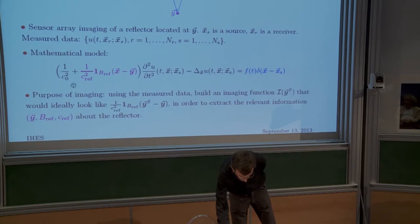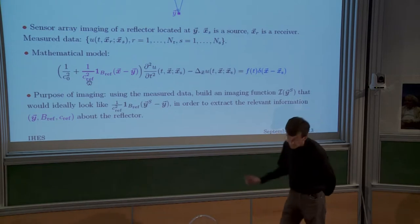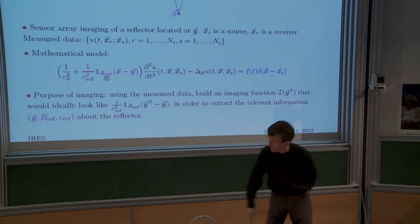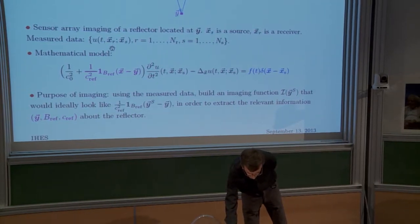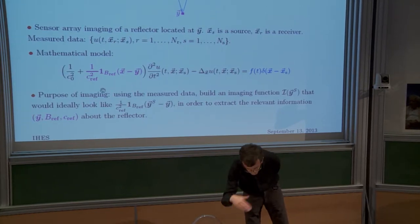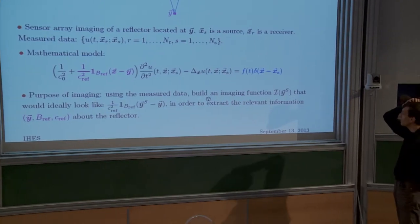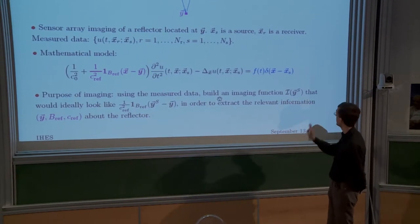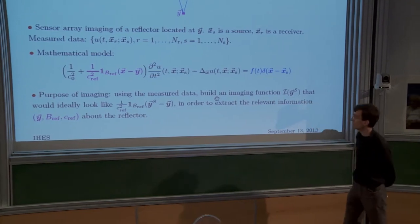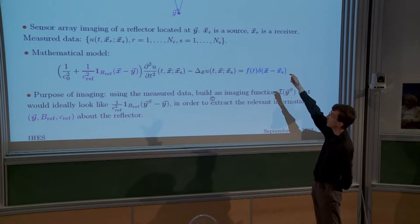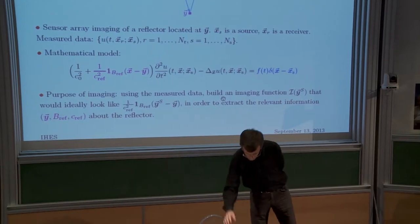In the wave equation you have a homogeneous medium with speed of propagation c0, plus a local perturbation centered around some point y that you don't know, with a shape b_ref and contrast c_ref that you don't know. The purpose of imaging, given measured data, is to recover the reflector location, shape, and contrast — to build an imaging function of the search point that will look like exactly what you are looking for: a reflector buried in the medium.